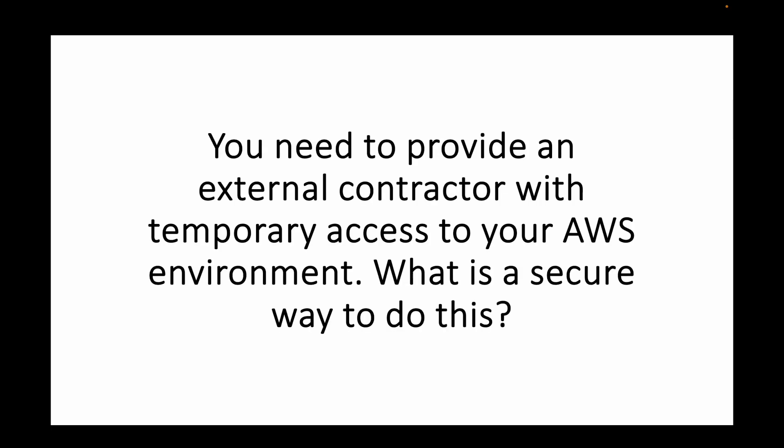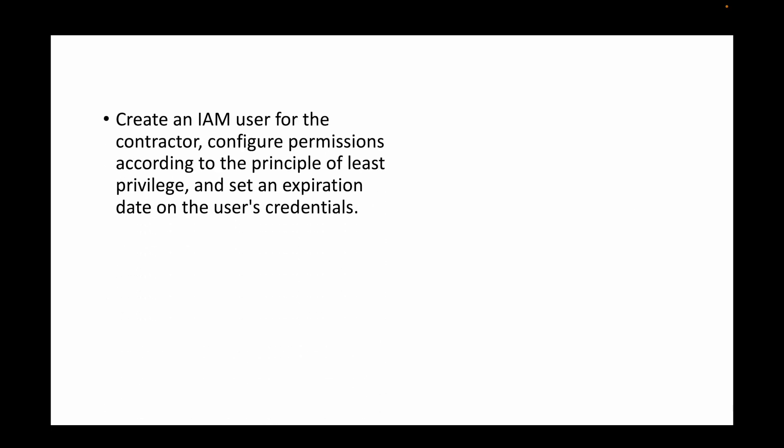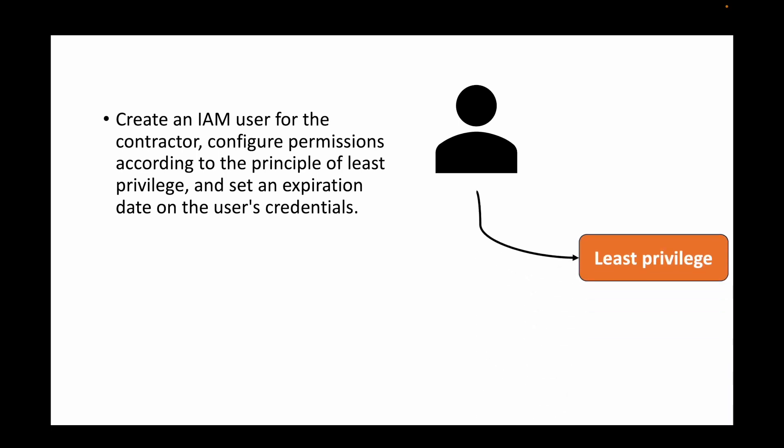The next question is: you need to provide an external contractor with temporary access to your AWS environment. What is a secure way to do this? For this, we create an IAM user, configure the least possible permissions for what the user needs to do, and set an expiration date — for example, making the IAM user active for only one day. This ensures the user has very limited privilege and temporary credentials.